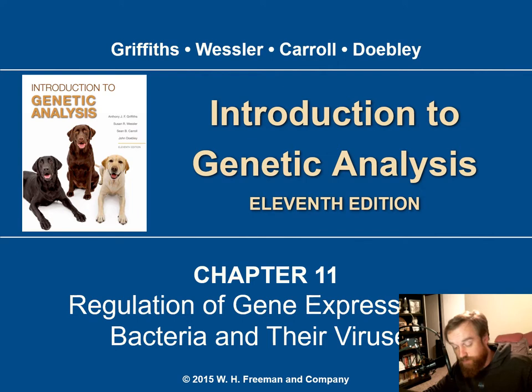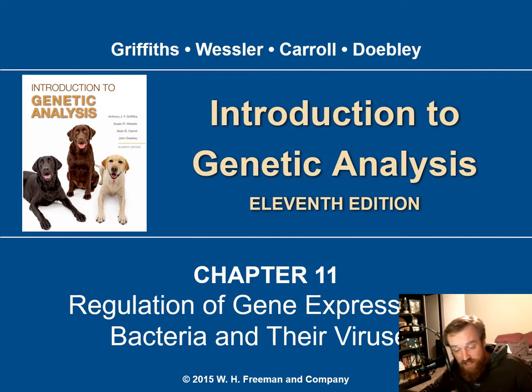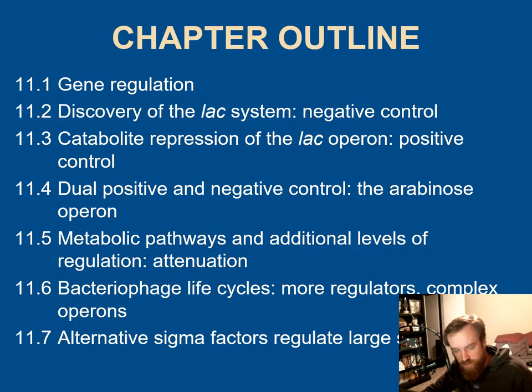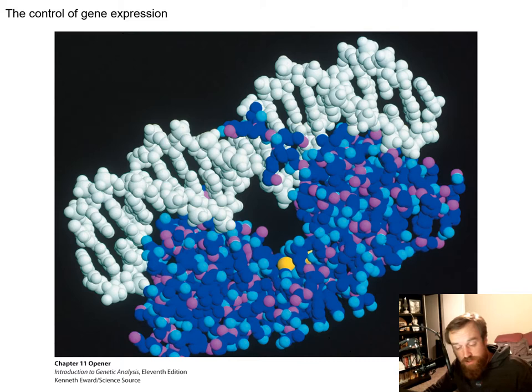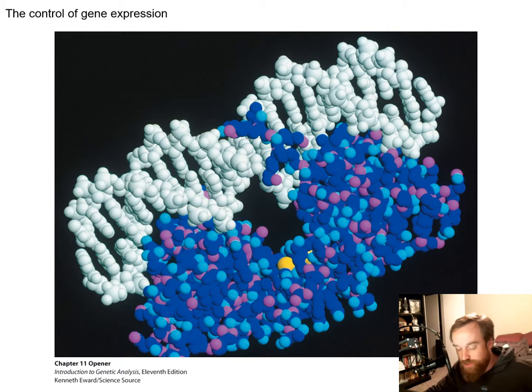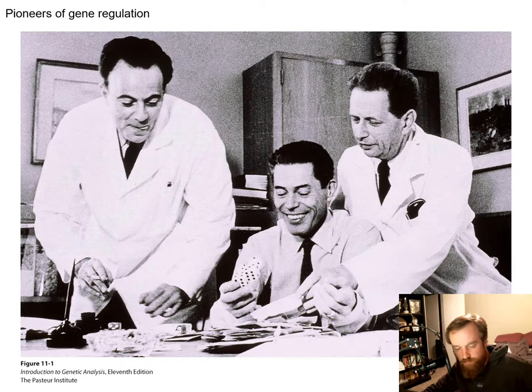In chapter 11, we're going to talk about the regulation of gene expression in bacteria. This goes along with our previous discussion of transcription in bacteria — now we look at how transcription is activated, repressed, and regulated. The control of transcription is controlled by a large class of proteins called transcription factors, which regulate an on-off switch or throttle on transcription for different genes. Some transcription factors increase or decrease transcription; others totally block it or completely activate it.